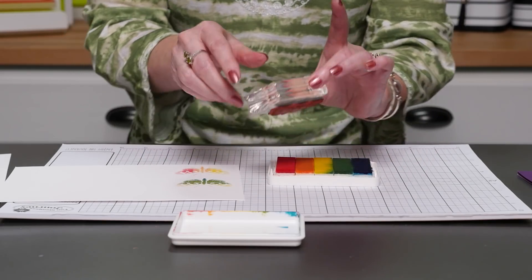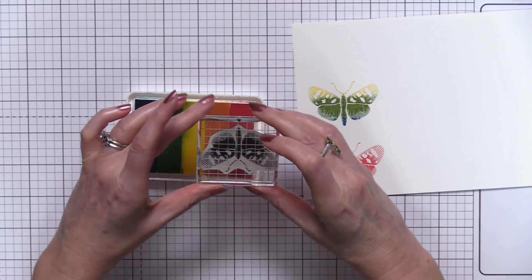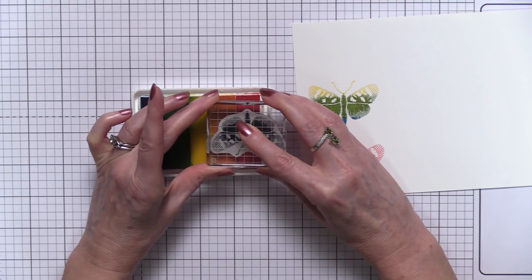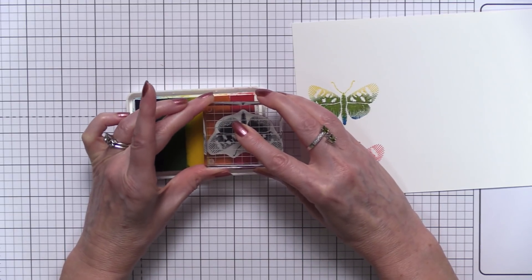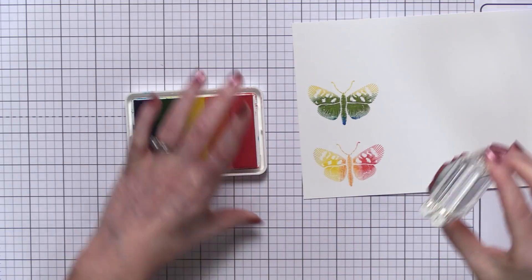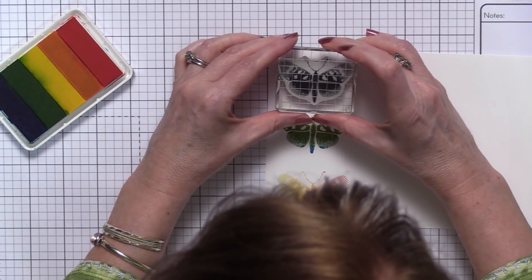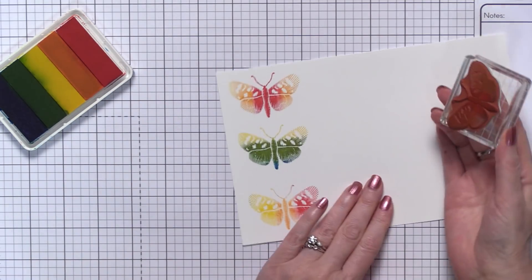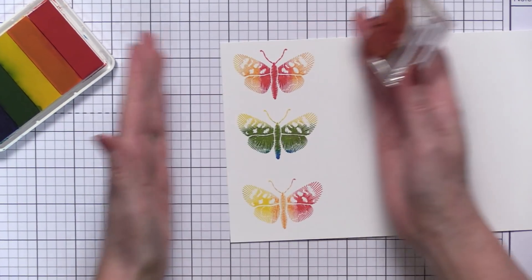Then we're going to rotate the stamp around and now we're going to ink up the other side, doing the exact same thing. And this looks like this, they're perfect. So now we have symmetrical colors in the wings.